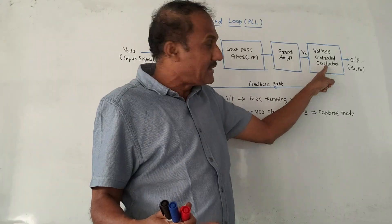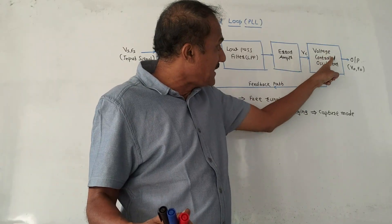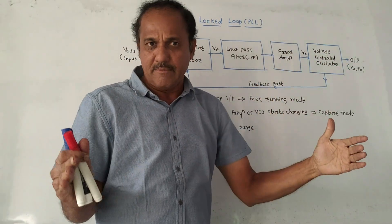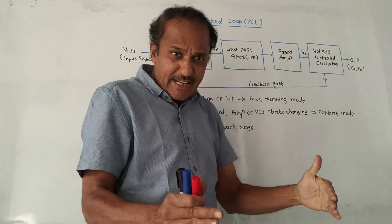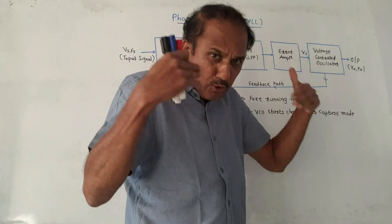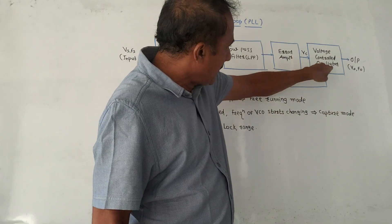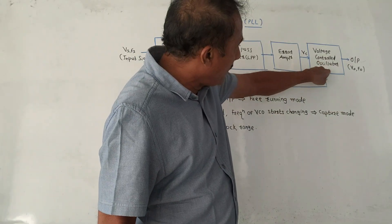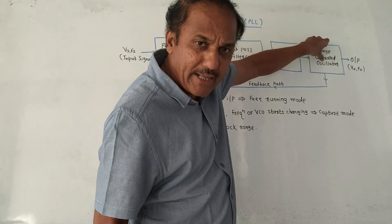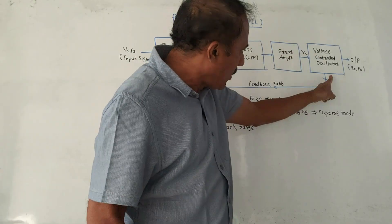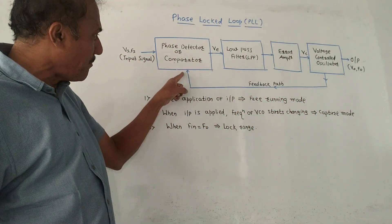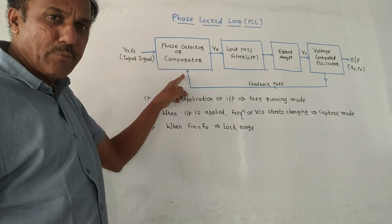The last important block is VCO, that is voltage controlled oscillator. As the name indicates, the oscillations — meaning the output frequency — change with respect to the voltage VC which is applied at the input of this device. This is the feedback path, and the signal is sent back to the input side.